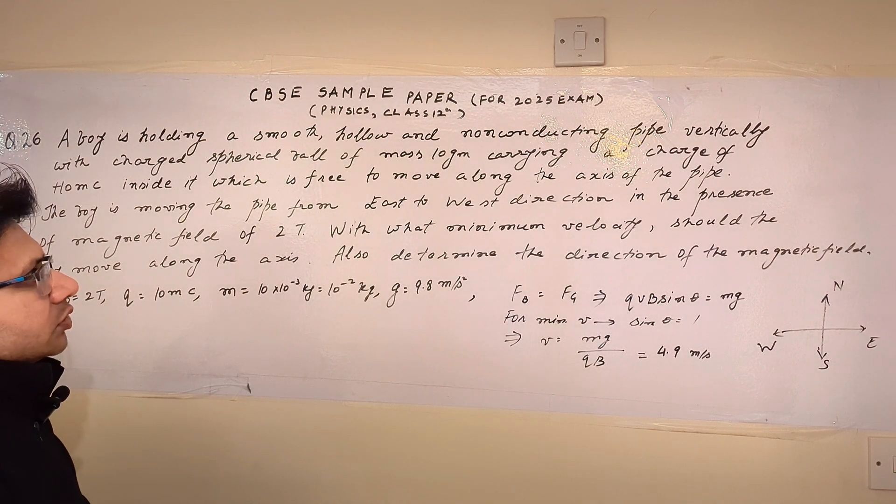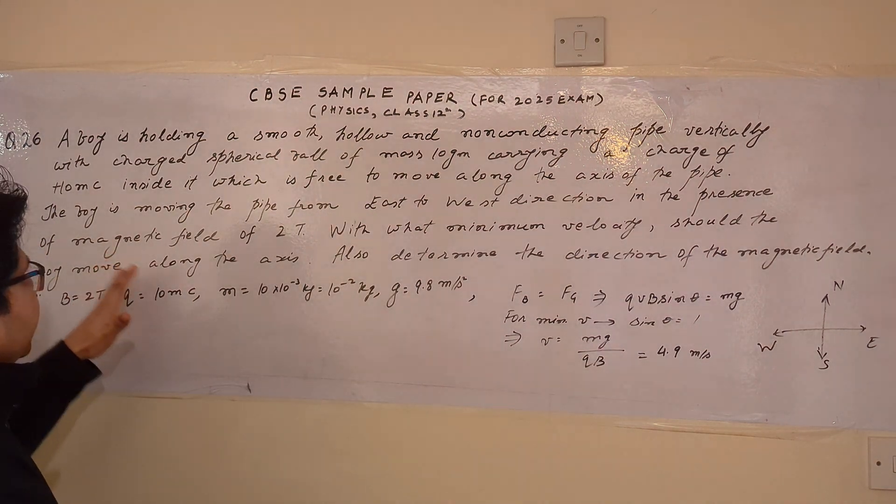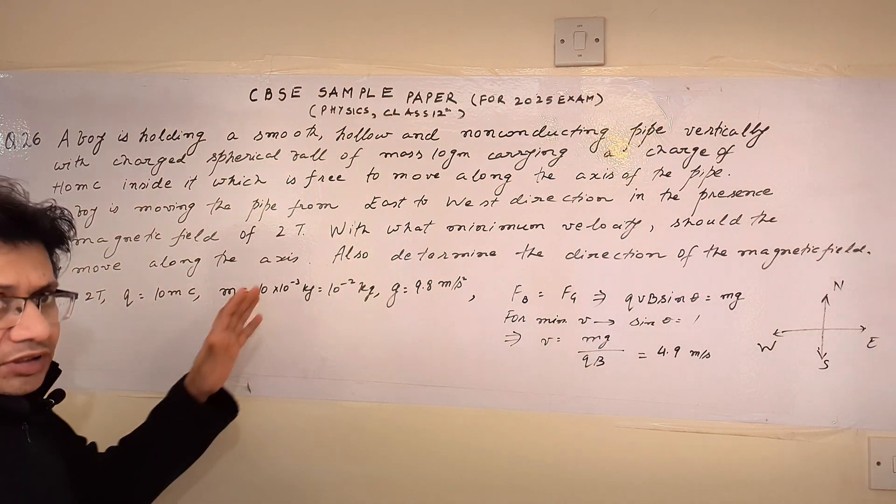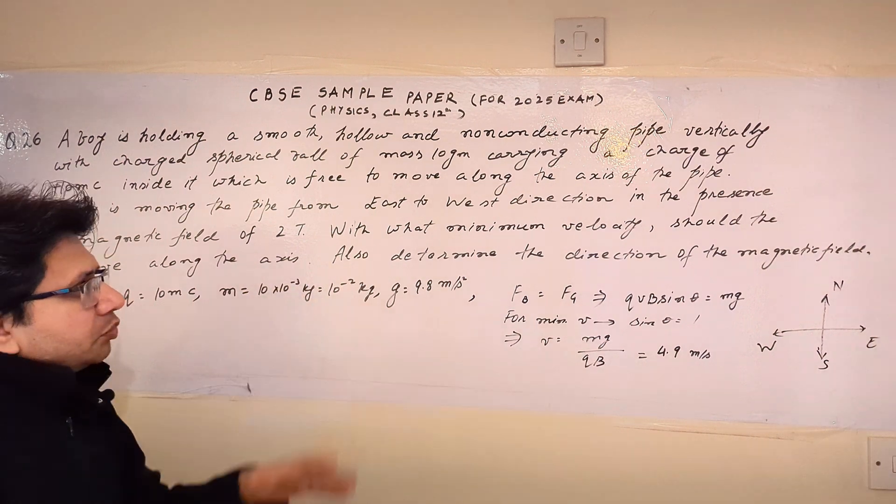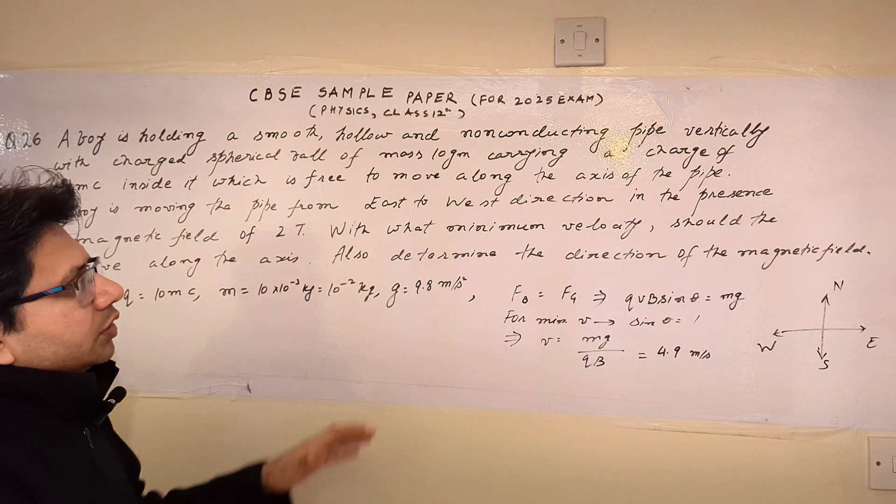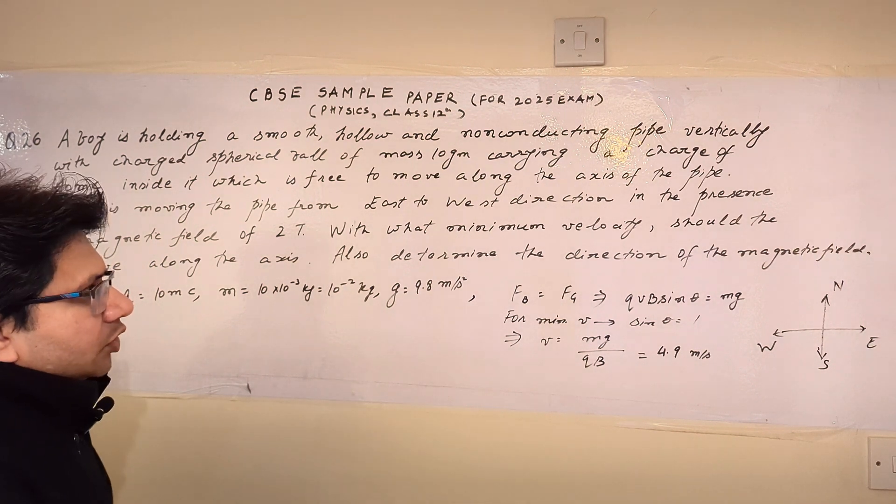which is free to move along the axis of the pipe. The buoy is moving the pipe from east to west direction in the presence of magnetic field of 2 tesla. With what minimum velocity should the buoy move along the axis? Also determine the direction of the magnetic field.